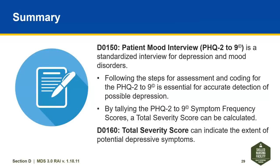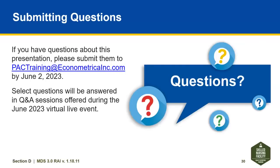In summary, the SNF MDS guidance manual provided revisions and new guidance for the coding of both D0150 and D0160. D0150 Resident Mood Interview PHQ 2 to 9 is a standardized interview for depression and mood disorders. Following the steps for assessment and coding is essential for accurate detection of possible depression. By tallying the PHQ 2 to 9 symptom frequency scores, a total severity score can be calculated. D0160 total severity score can indicate the extent of potential depressive symptoms. Please submit questions to packtraining@econometricainc.com by June 2, 2023. Select questions will be answered in Q&A sessions offered during the June 2023 virtual live event. Thank you for reviewing and enjoy your day.